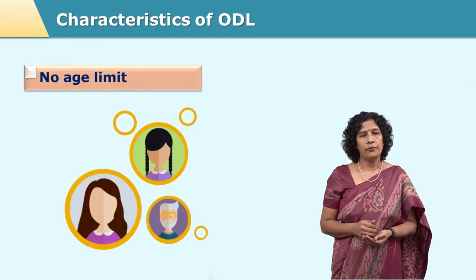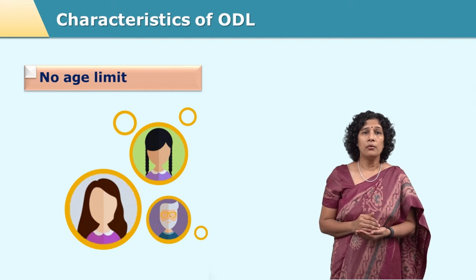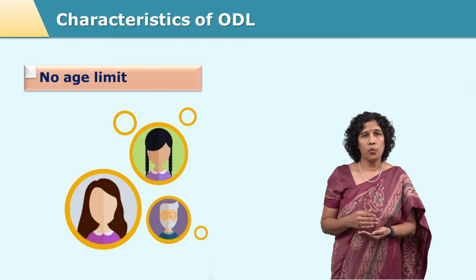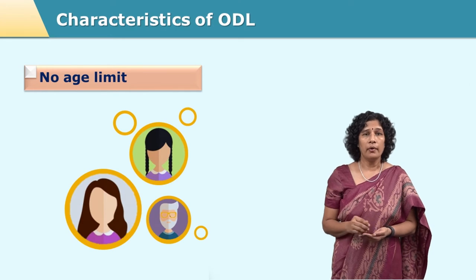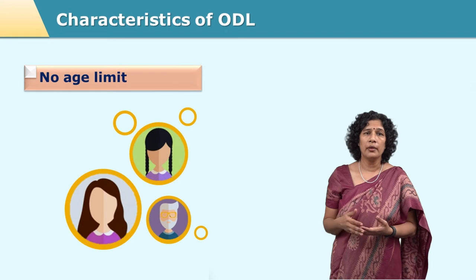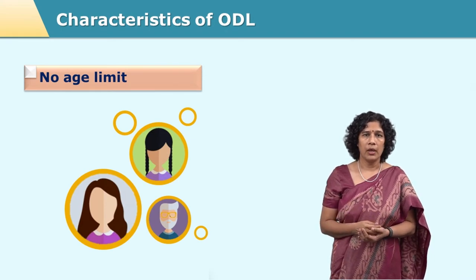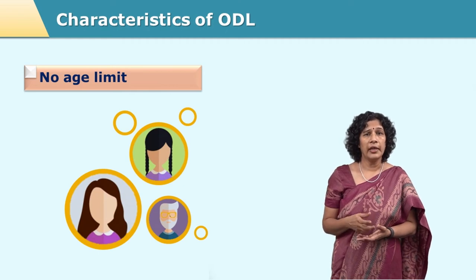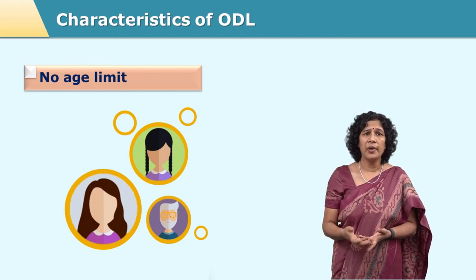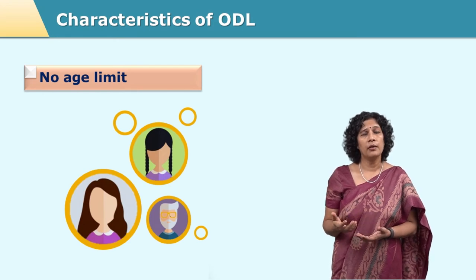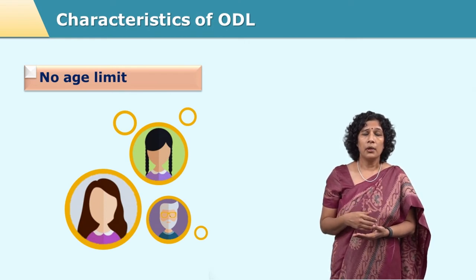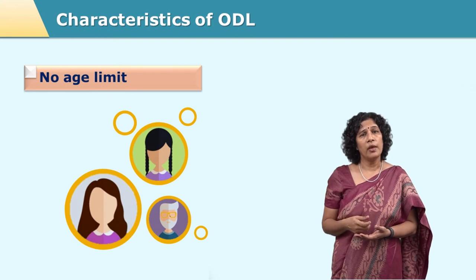Another important feature of open and distance education is there is no age limit. For certain programs there is a minimum age requirement of 18 years, but no program specifies a maximum age. Persons even aged 80 or 85 years are sometimes enrolled in programs like a BA, giving learners more options to pursue subjects of interest.